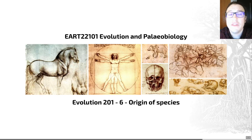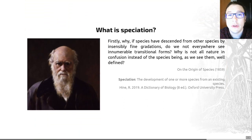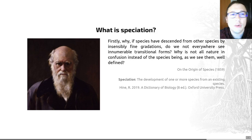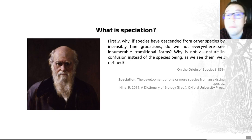Hello there and welcome to video number six of Evolution 201. This is our final video in which we're going to be looking at the origin of species. That title is a nod to Charles Darwin because speciation — the formation of new species — is one of the key things that Darwin focused on early on when developing the theory of evolution, and he grappled with the idea of what a species is and how species formed for much of his career.